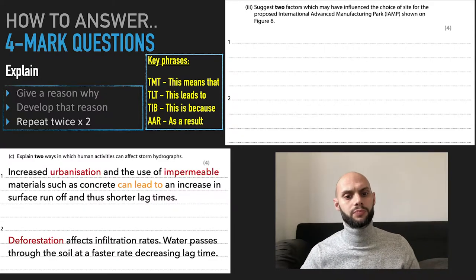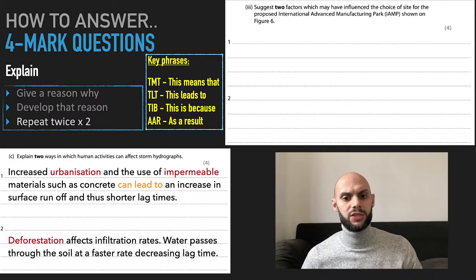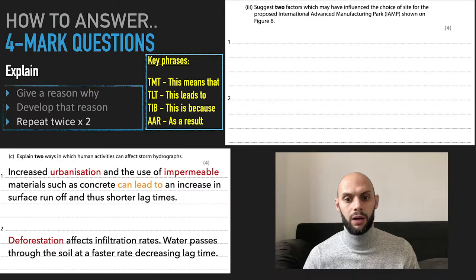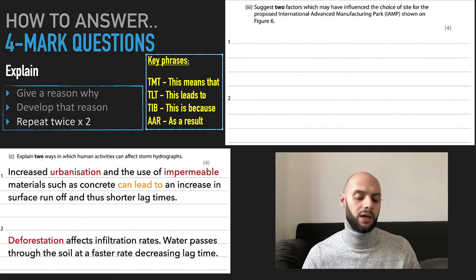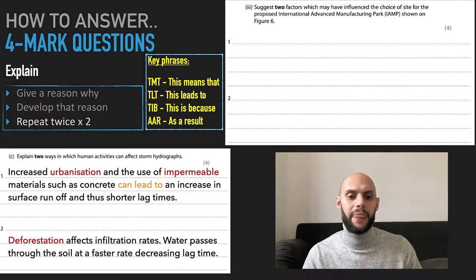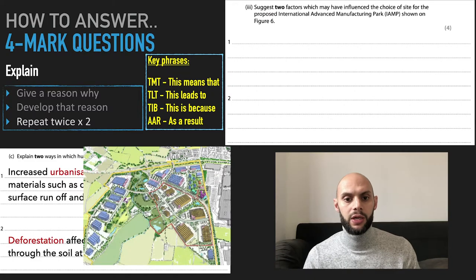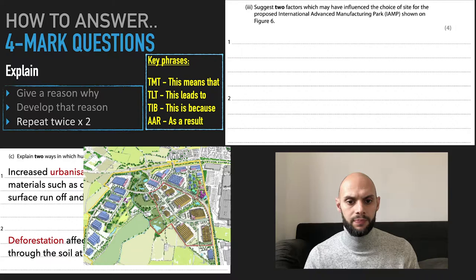Let's give you another example. Suggest two factors which may have influenced the choice of site for the proposed international advanced manufacturing park shown on figure six. I haven't shown you figure six here, however I'm sure many of you would have come across this question before in the previous paper.